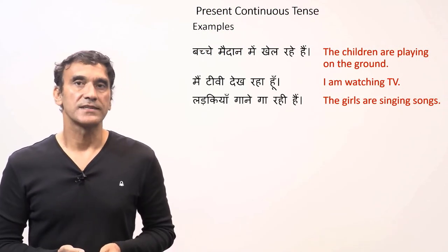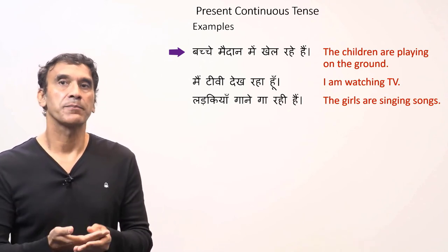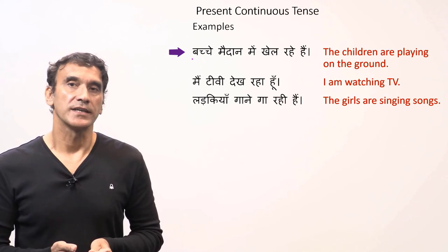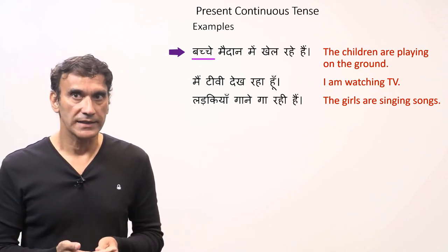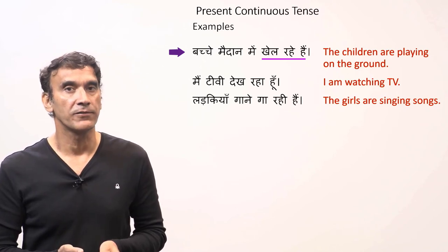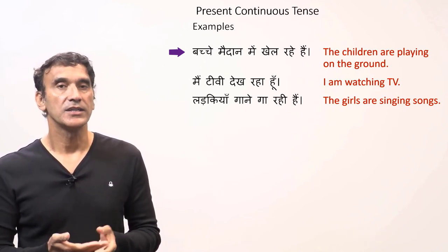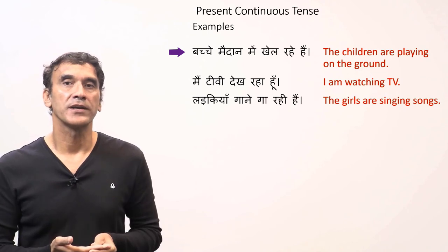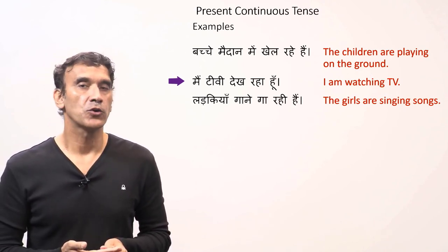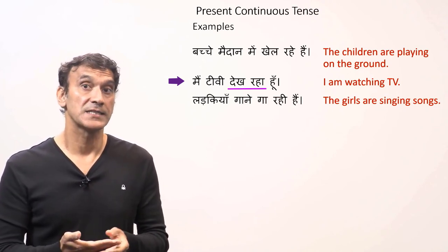Let's take some example sentences. 'Children are playing on the playground' — the subject 'bachche' (children) is masculine plural, so the participle and the helping verb are in masculine plural form: 'bachche maidan mein khel rahe hain' — the children are playing on the playground.